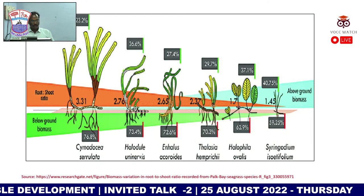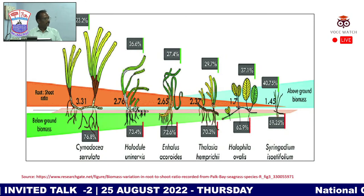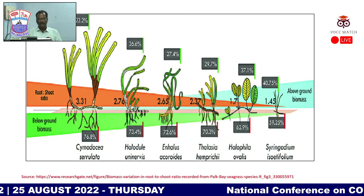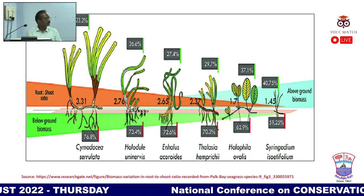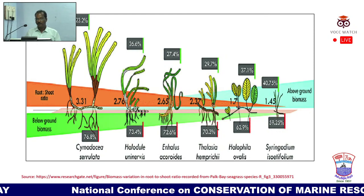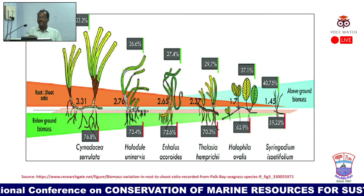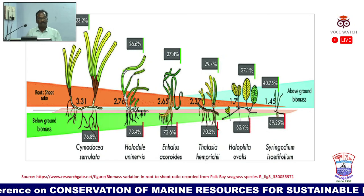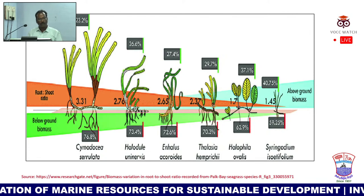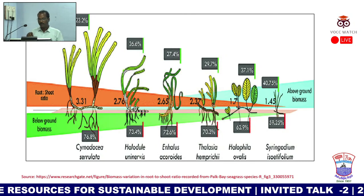Looking at seagrass biomass data: in Cymodocea serrulata, the root accounts for 76.8 percent and the shoot for 23.2 percent. In Halodule uninervis, the root is 73.4 percent and the shoot 26.6 percent. This very high root proportion helps the seagrass withstand different climatic conditions. In shallow coasts with high wave action, a stronger root system is essential for the seagrass to remain anchored.